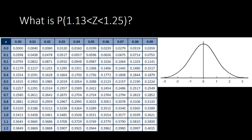Moving on to the next problem: P(1.13 < z < 1.25). The P stands for probability. In the normal distribution, probability is the same as the area covered by the two z values. Here z is in between, so the area we're looking for is the area between the two z values.